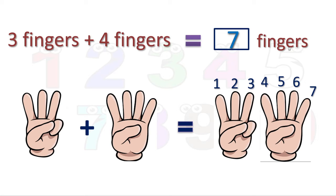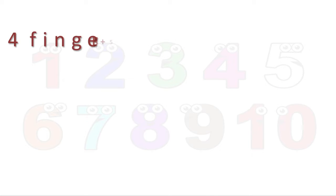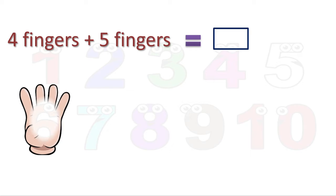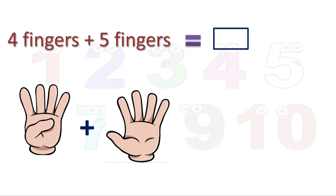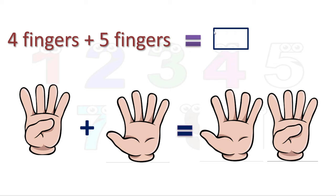Some more examples. Second one: 4 fingers plus 5 fingers is equal to how many fingers? Here are our 4 fingers plus 5 fingers. We will join them together. I will take 5 in the first position, then add 4 — it becomes very easy to calculate. Count: 1, 2, 3, 4, 5. You know this — 5 fingers. One hand has 5 fingers.